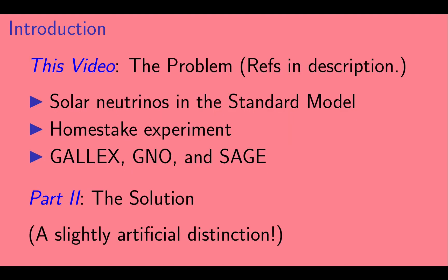So this is a two-part series. Here in part one, we will talk about how the solar neutrino problem arose. We'll talk about solar neutrinos in the standard model, and then we'll talk about the experiments.